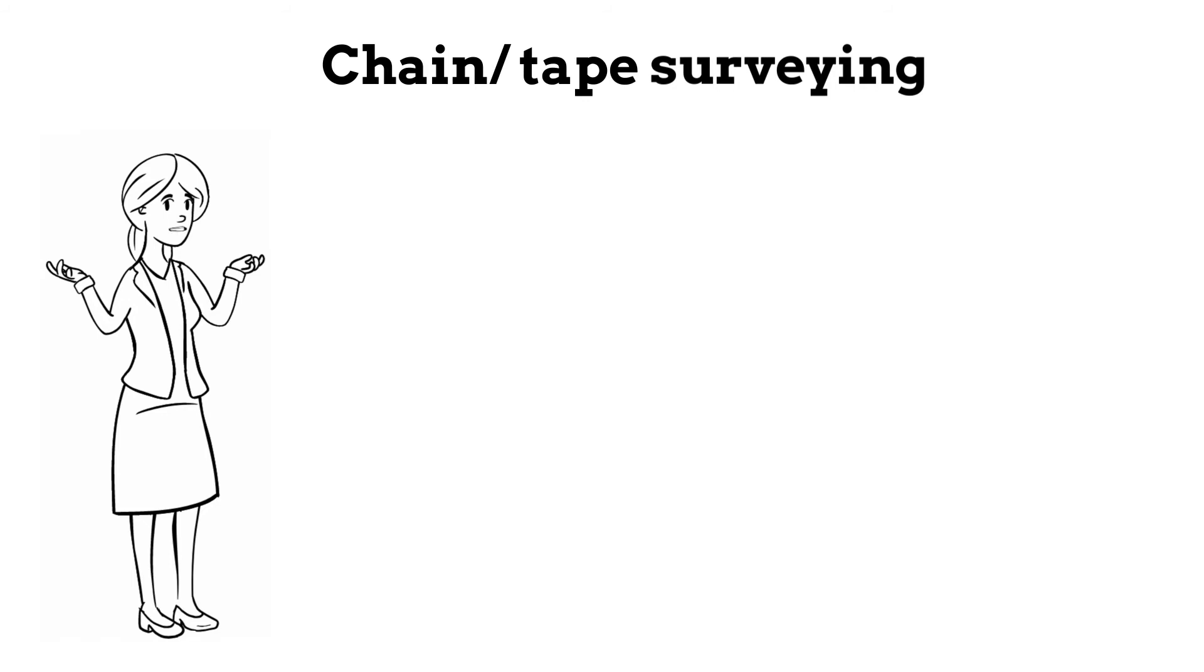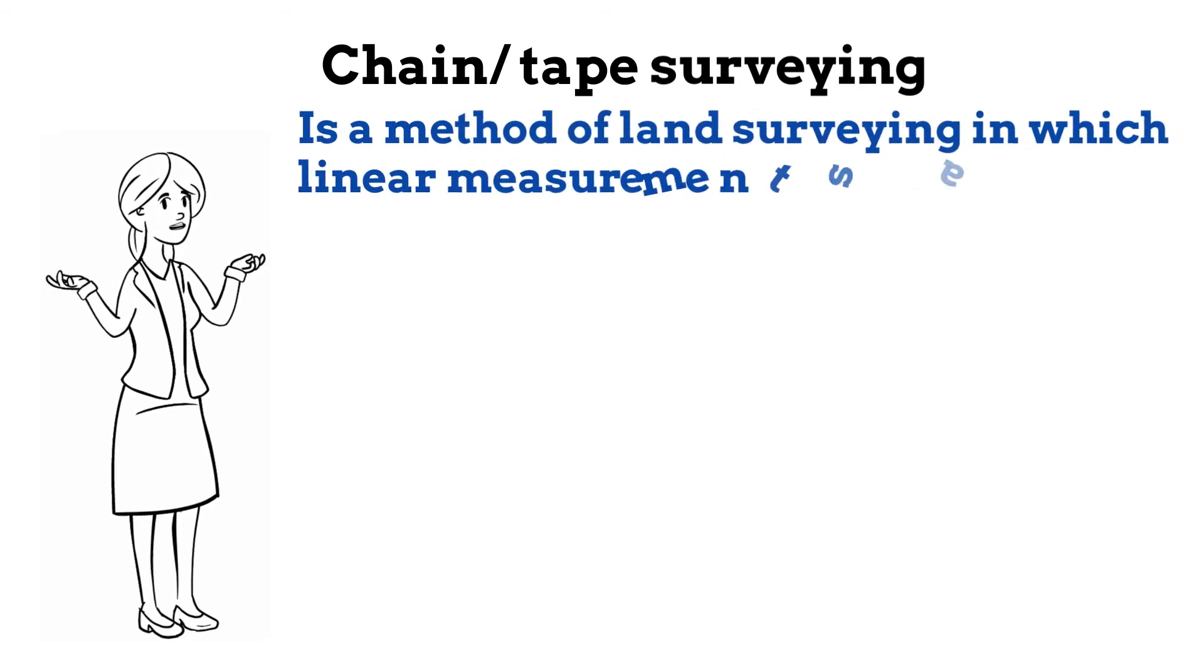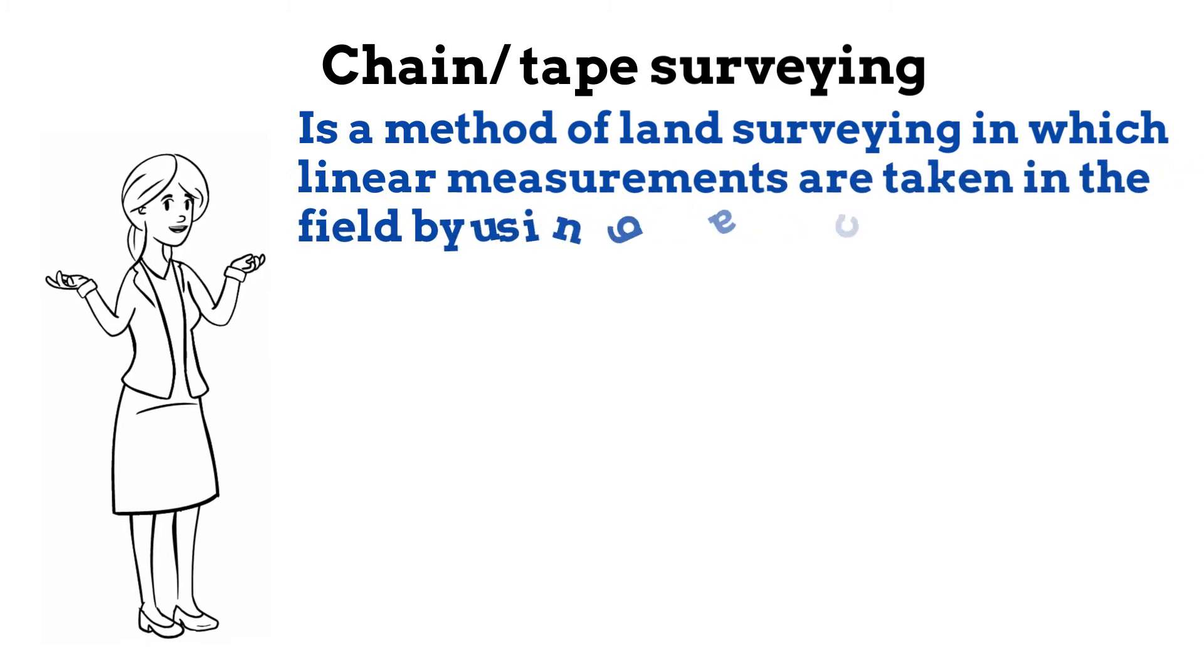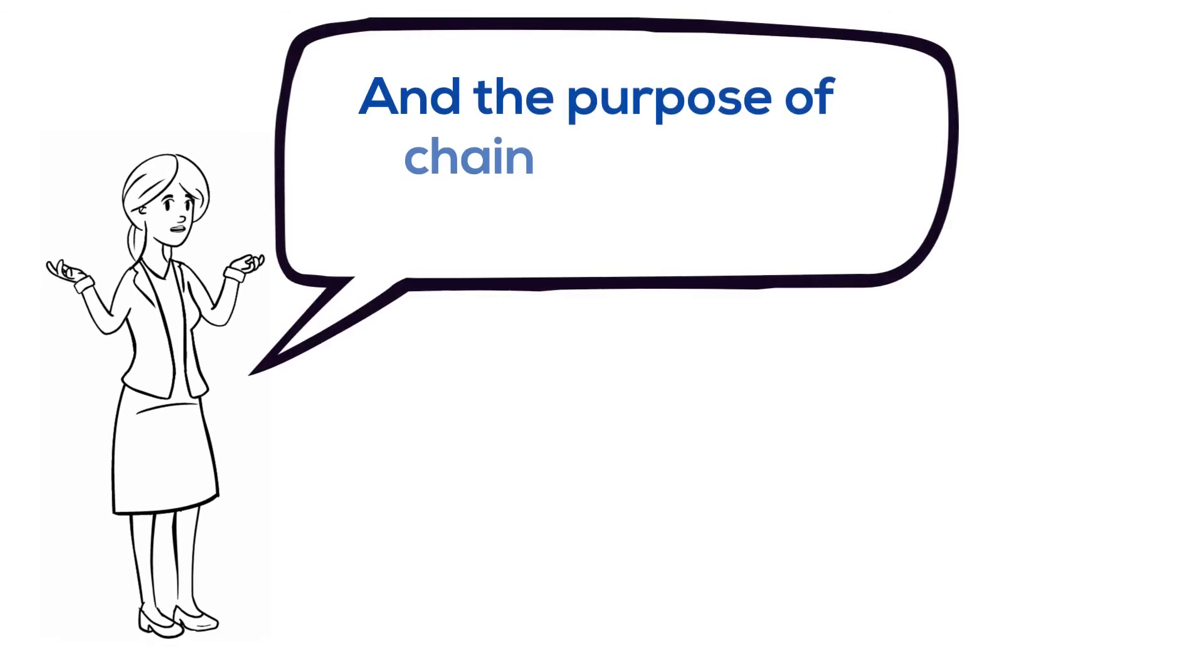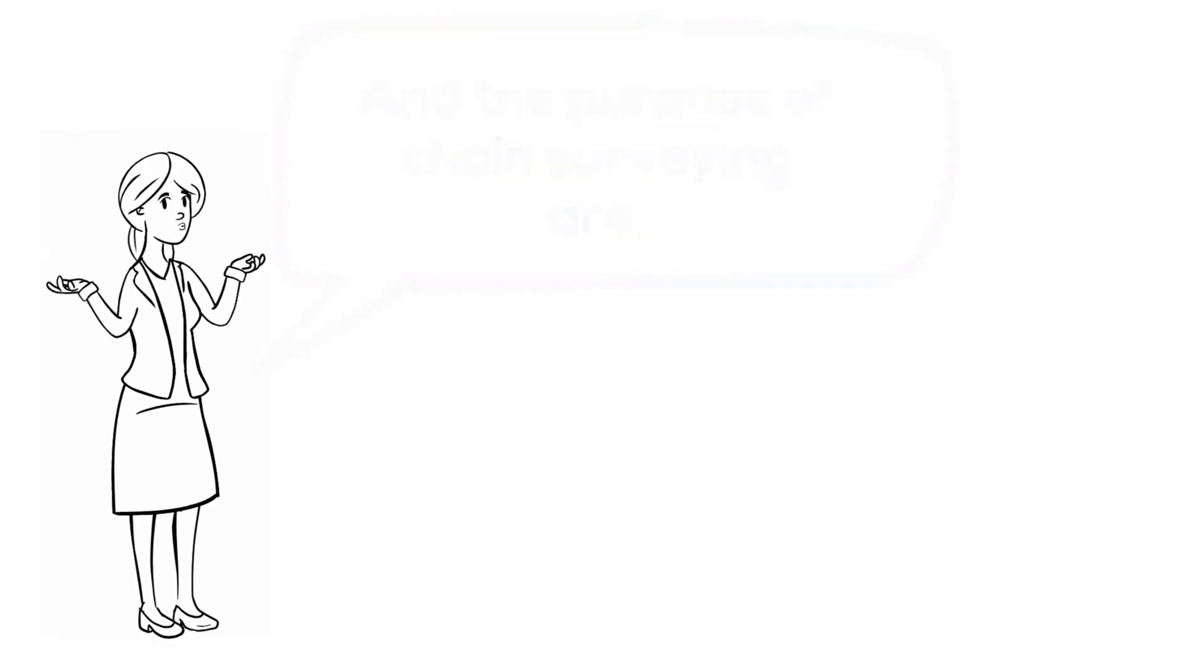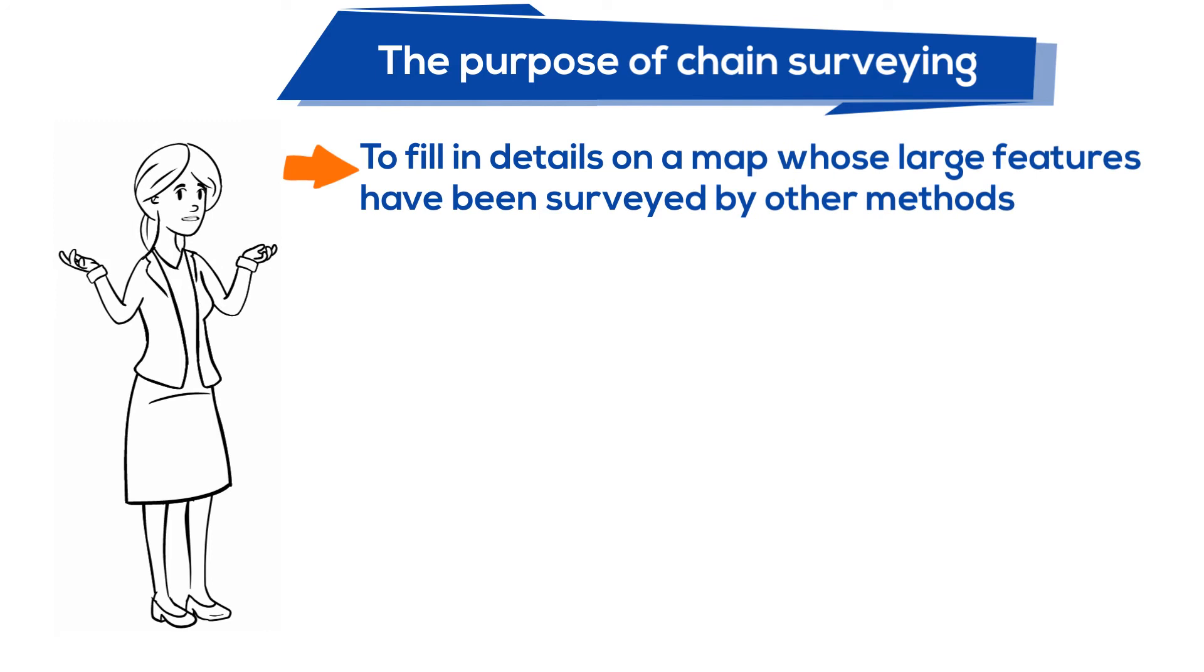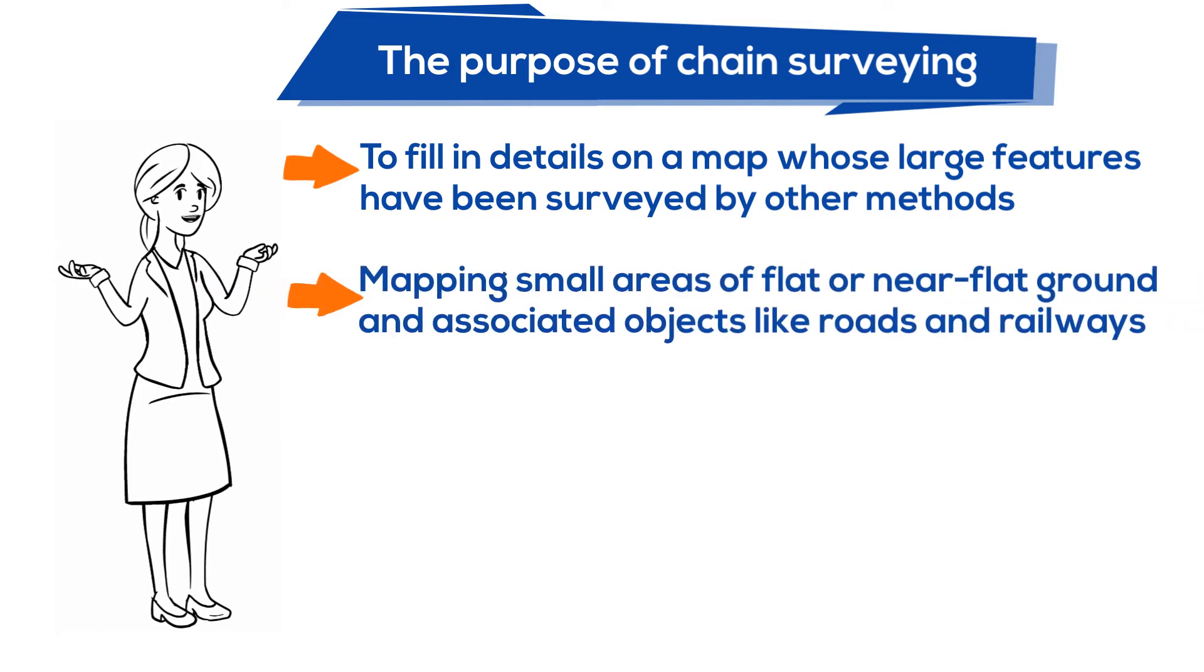Chain or tape surveying is the method of land surveying in which linear measurements are taken into field by using a chain or a tape measure. The purpose of chain surveying are to fill in details on a map whose larger features are being surveyed by other methods, mapping small areas of flat or near flat ground and associated objects like roads and railways, and military for security purposes.